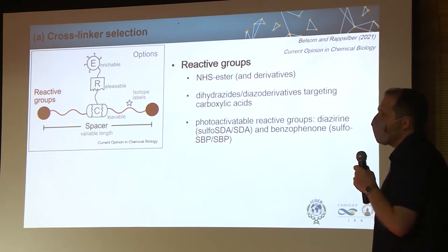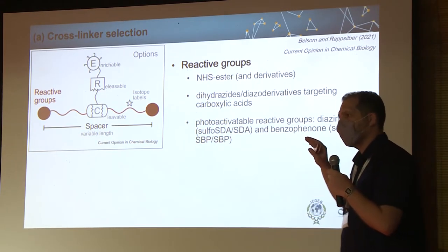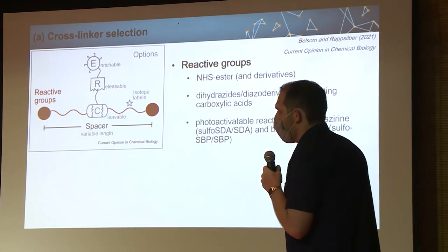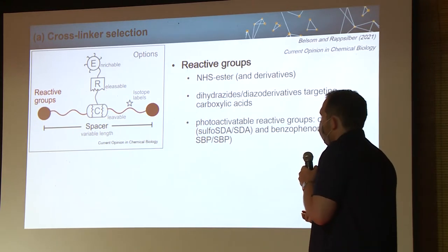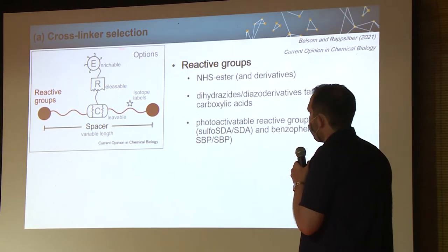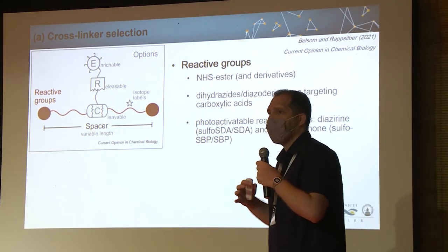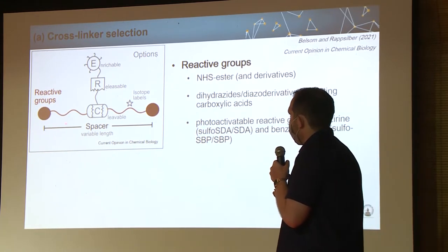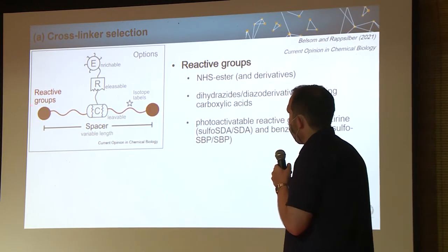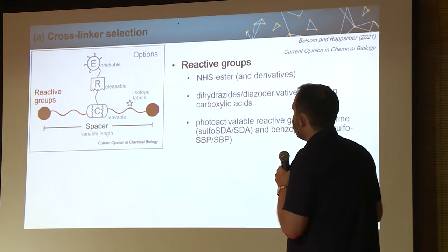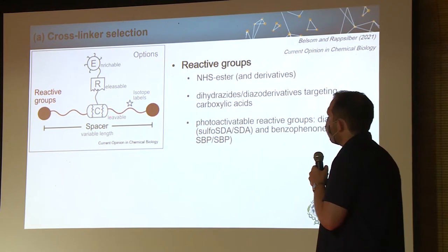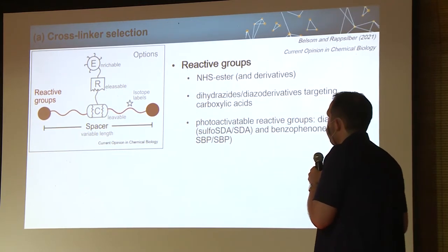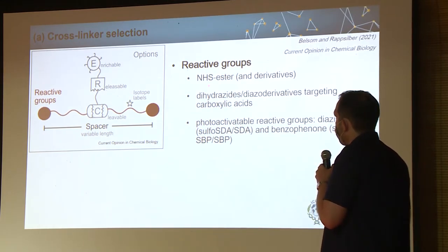Cross-linker selection is important — searching online you'll find hundreds of different cross-linkers. The anatomy of a cross-linker molecule can range from very simple to very complex. The most important feature is the reactive group that joins two residues together. Cross-linkers can also have additional features that make enrichment or detection in the mass spectrometer easier. Regarding reactive groups, there are three main types.